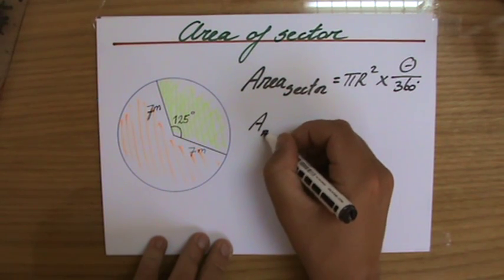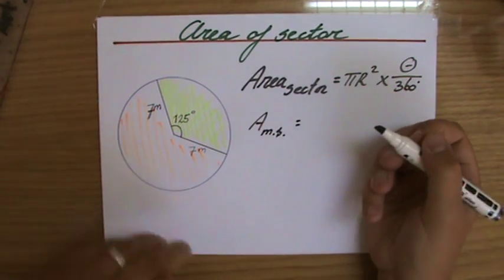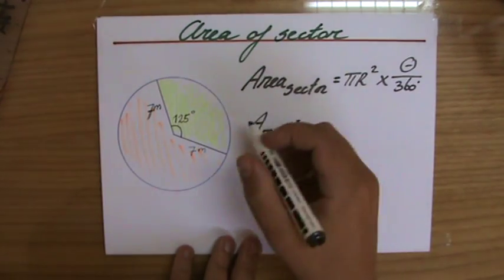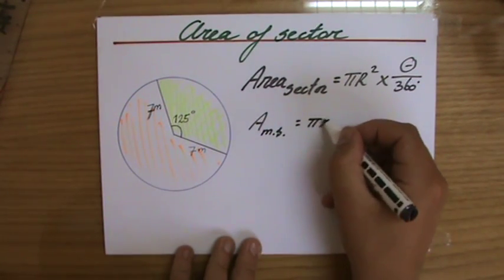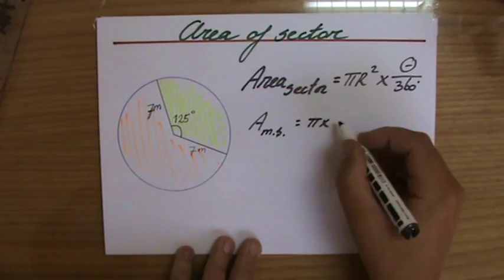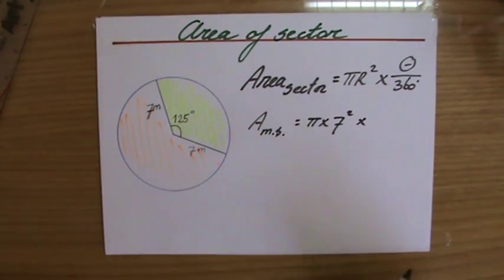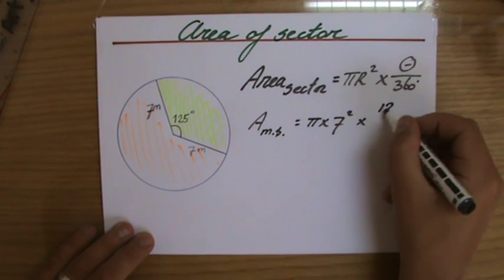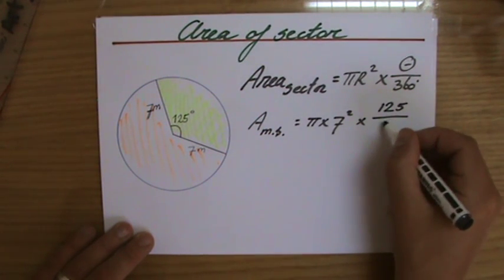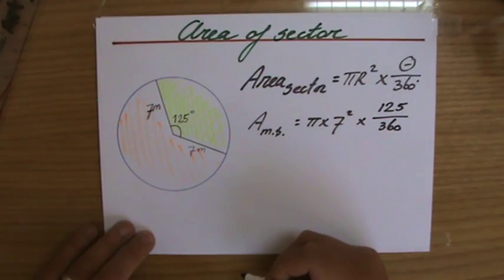So the area of my minor sector is πr², π times the radius squared. The radius is seven, isn't it? Times, now which part are you interested in? I'm interested in 125 out of 360.